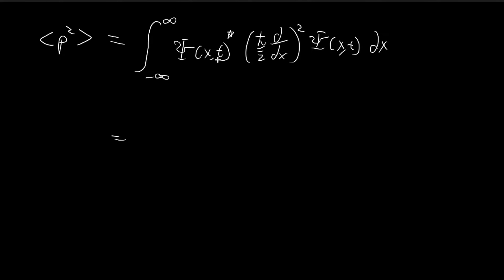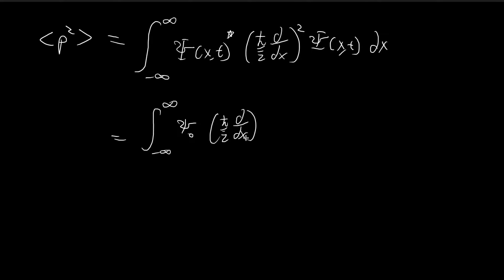As explained in the previous video, because of the conjugate sign, the time components of these two wave functions are going to cancel out. So in the end, we're going to be left with a slightly simpler expression: psi naught times the momentum operator squared applied to psi naught, all integrated dx.